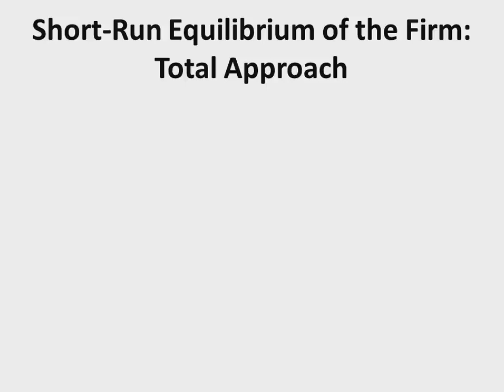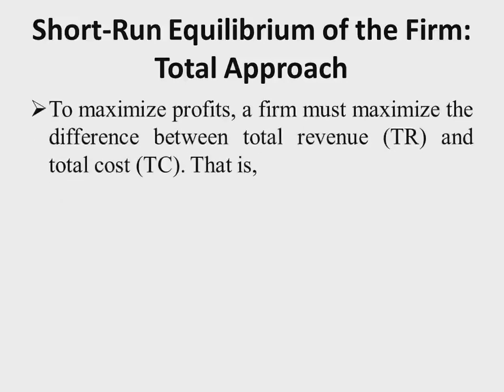Now let's look at the short-run equilibrium determination under perfect competition. The first approach is the total revenue approach, where we look at total revenue as well as total cost, and then the gap between the two to find where profit is maximized. The largest gap determines the level of output the firm will produce. To maximize profits, a firm must maximize the difference between total revenue and total cost.